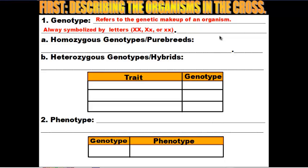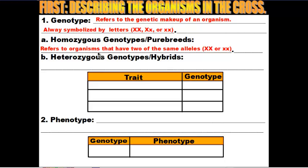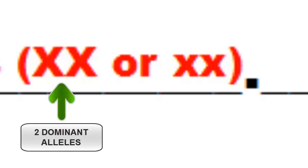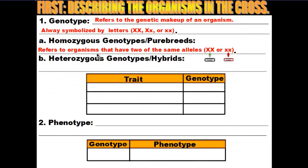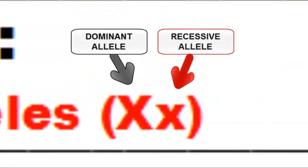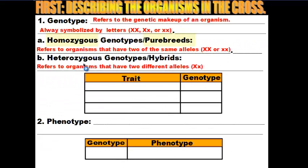When we talk about genotypes, there are two types you have to be aware of. You need to be aware of homozygous genotypes, which are the same as pure breeds, and also heterozygous genotypes, which are the same as hybrids. The prefix homo means the same, so a homozygous genotype refers to an organism that has two of the same alleles — either two dominant alleles or two recessive alleles. Hetero means different, so heterozygous genotypes refer to organisms that have two different alleles: one dominant and one recessive. Pairing homozygous with pure breeds and heterozygous with hybrids should make these easy to remember.